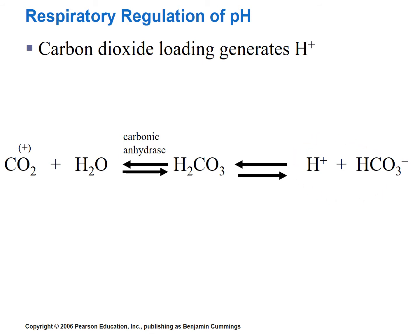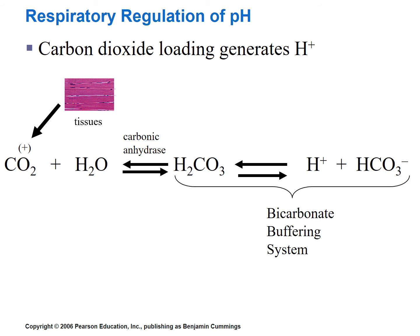Where does the carbon dioxide in this equation come from? It is generated by the tissues as a byproduct of aerobic respiration. Cellular respiration occurs in the mitochondria of cells — oxygen is consumed to oxidize molecules and produce ATP, with carbon dioxide and water as byproducts. That carbon dioxide is loaded into the blood, and water in the blood combines with carbon dioxide to form carbonic acid, which dissociates into hydrogen ions and bicarbonate. This portion of the equation is the bicarbonate buffering system.